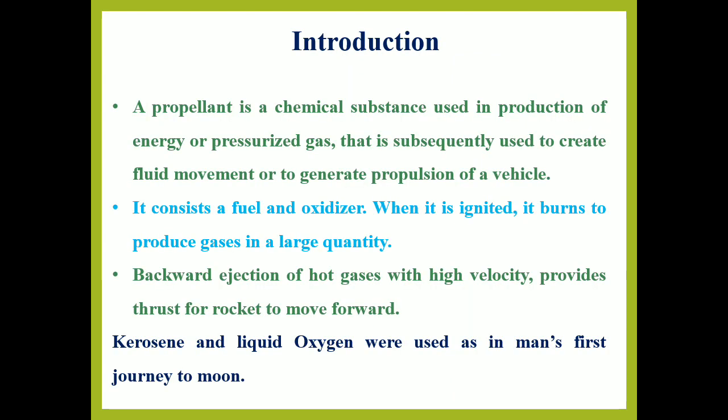Propellant is made up of two words: pro and pillar. Pro means forward and pillar means pushing. So any substance which is used to push forward a vehicle is known as propellant. In simple words, the substances which are used for propulsion of a rocket are known as rocket propellants or rocket fuels.